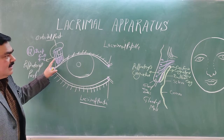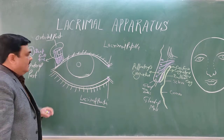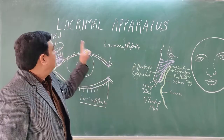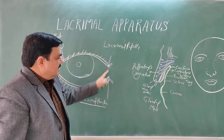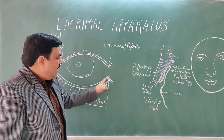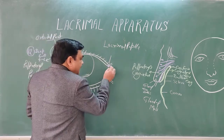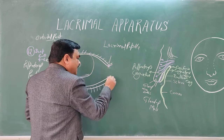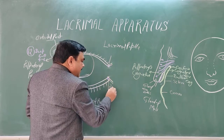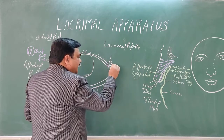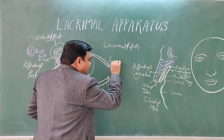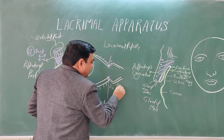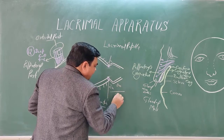So the lacrimal apparatus consists of: the lacrimal gland, lacrimal ducts, lacrimal papilla and lacrimal punctum. From the punctum, the lacrimal canaliculus has a vertical part of 2 millimeters and then a horizontal part of 8 millimeters, giving a total length of about 10 millimeters.